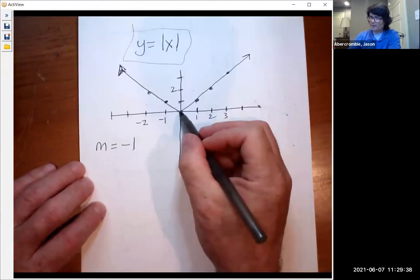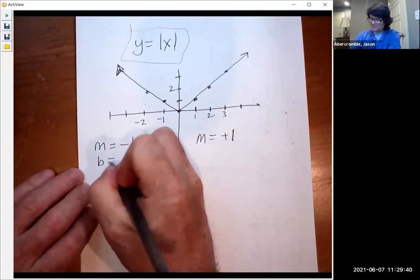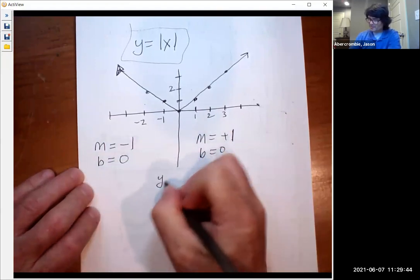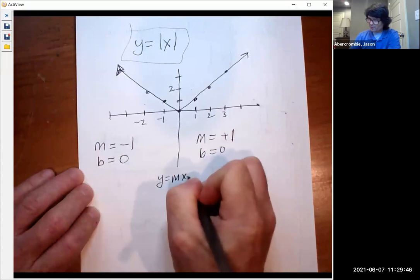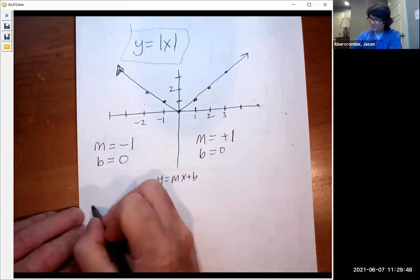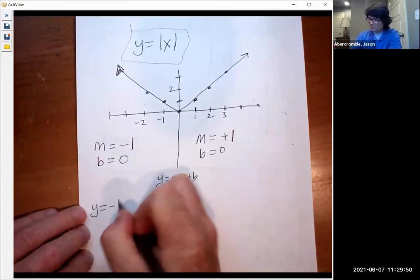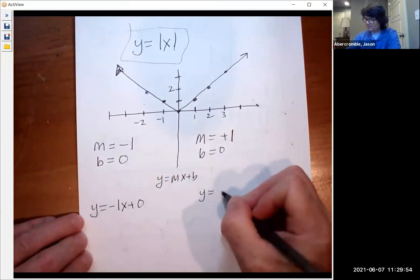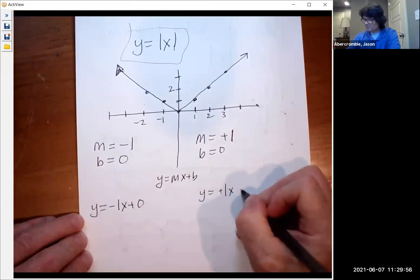And for both of them, the y-intercept is zero. So if you want to think about y equals mx plus b for an equation, this line is y equals negative one x plus zero. And this side is positive one x plus zero.